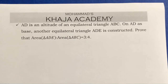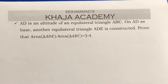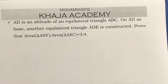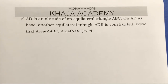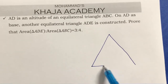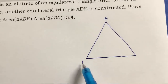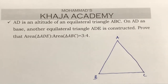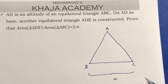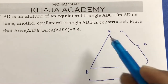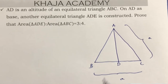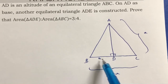AD is an altitude of an equilateral triangle ABC. On AD as a base, another equilateral triangle ADE is constructed, such that the area of triangle ADE to the area of triangle ABC is 3 to 4. Here, equilateral triangle ABC has all three sides equal to A.